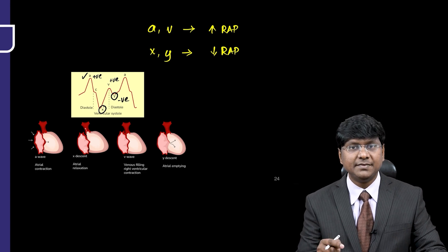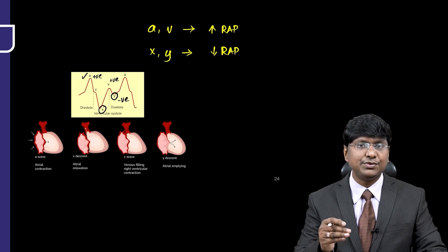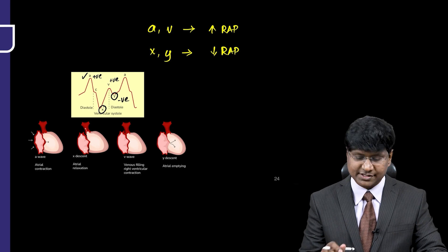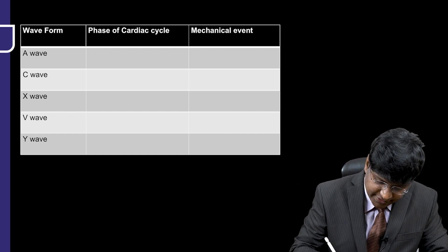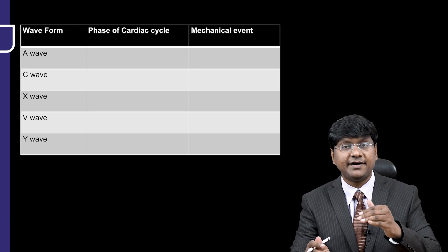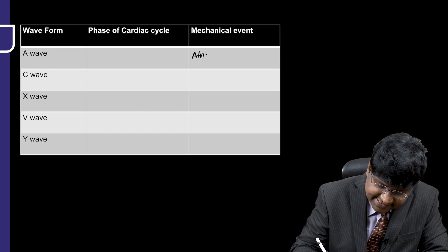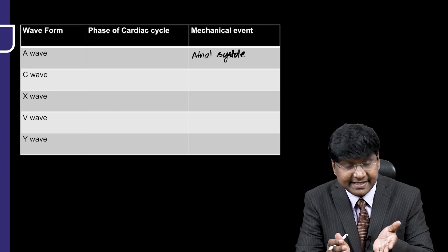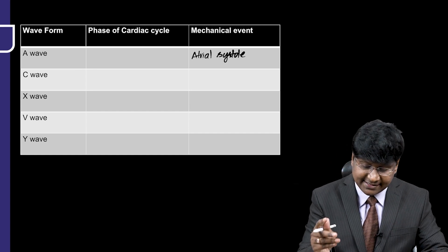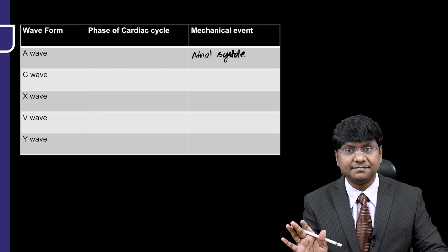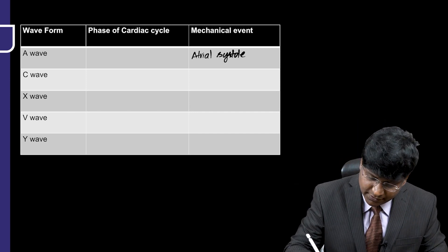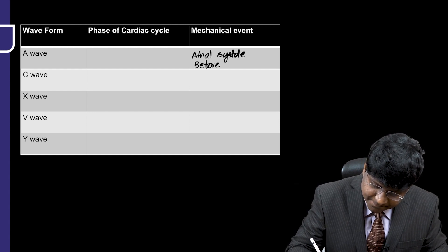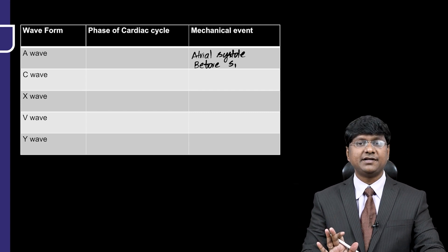Let us discuss why these waves appear, what they indicate, and how to correlate them with cardiac cycle events. The A wave occurs due to atrial contraction. The pressure within the right atrium increases during atrial systole, and that increase in right atrial pressure is represented by the A wave. It is the dominant wave occurring before the carotid pulsations and before the appearance of S1.